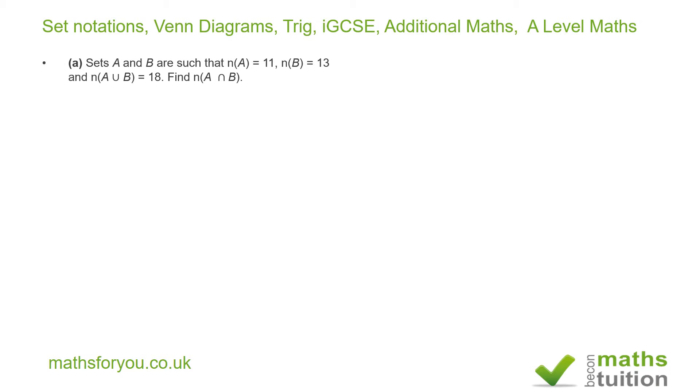It says that sets A and B are such that the number of elements in set A is 11, the number of elements in set B is 13, and the number in A union B, which means the number of elements in A and B combined, is 18. It then says find the number of elements in A intersection B.